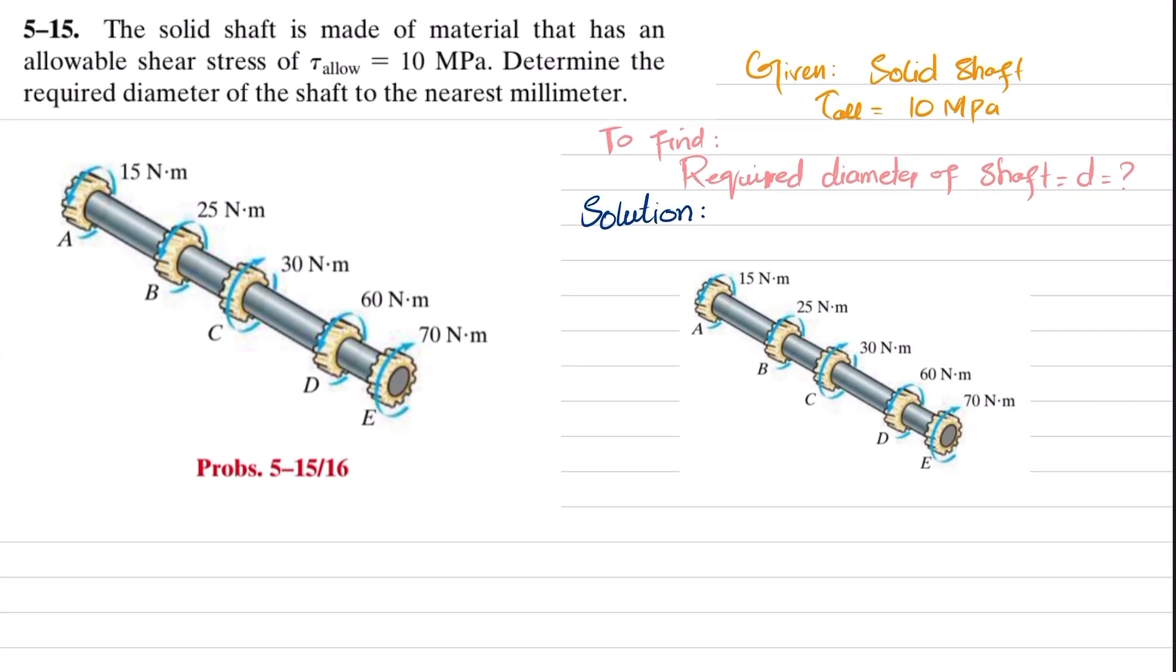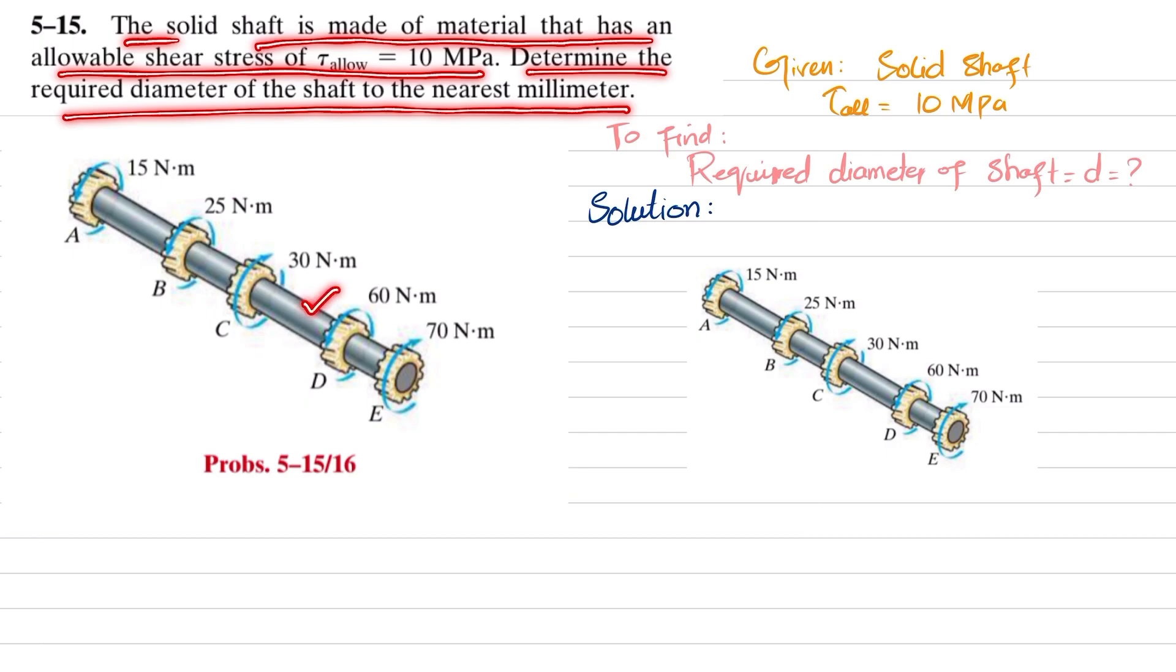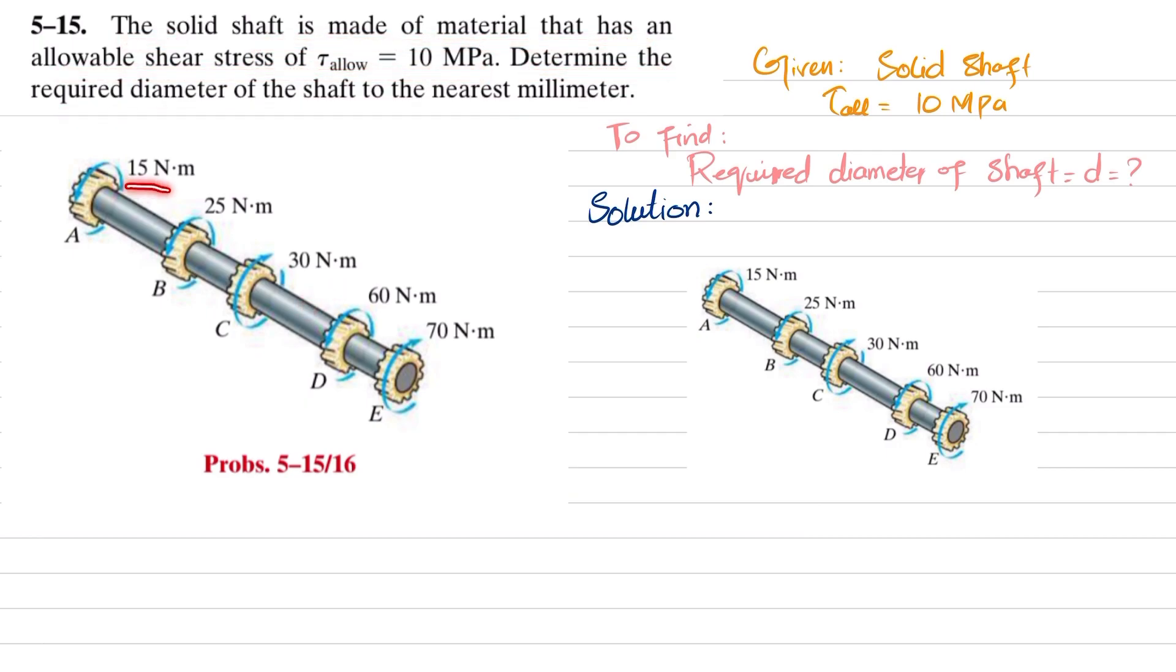Welcome back to Problem 5-15. In this problem, a solid shaft is made of material having an allowable shear stress of 10 megapascals. Determine the required diameter of the shaft to the nearest millimeter. You can see this is the shaft with all the torques mentioned at various points on the gears, so we have to find the required diameter.